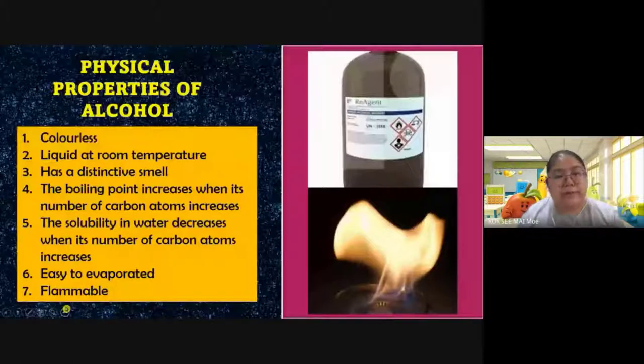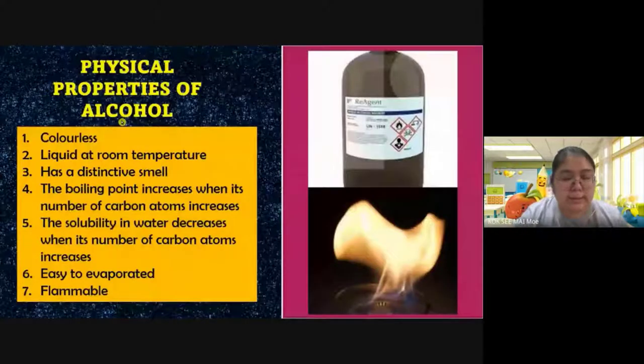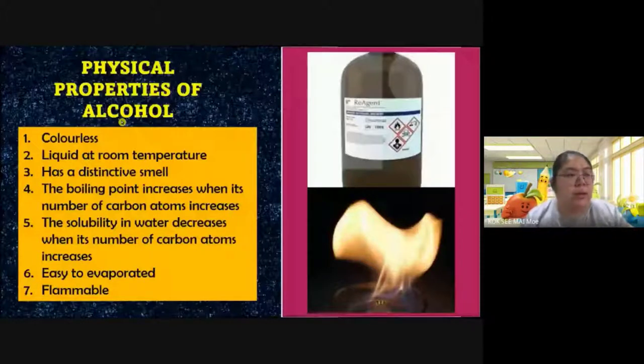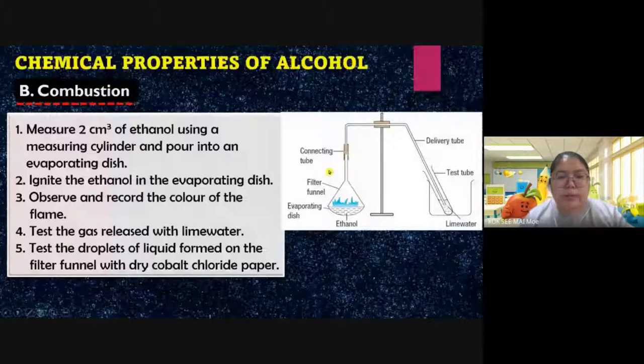Physical properties are what you can observe from the outside. Chemical properties require a process before you can see the results. For the combustion chemical property: measure 2 cm³ of ethanol using a measuring cylinder, pour into an evaporating dish, then ignite. Observe and record the color of the flame, test the gas released with lime water, and test the liquid droplets with dry cobalt chloride paper.